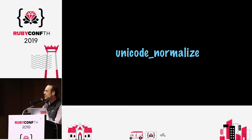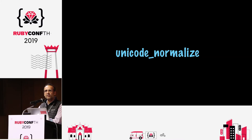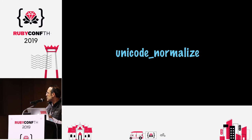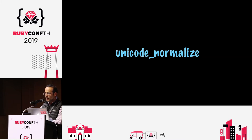It turns out there is a known solution, supposedly, for this problem. Everyone says, oh, just use Unicode Normalize — it'll take care of all your problems. Any anomalies you see with string functions will all go away. Well, let's understand how Unicode Normalize actually works before accepting it as a solution. It turns out that Unicode has this concept of equivalence, where some sequences essentially represent the same character.